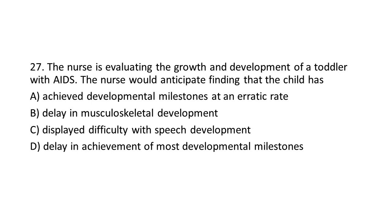Question 27. The nurse is evaluating the growth and development of a toddler with AIDS. The nurse would anticipate finding that the child has: A. Achieved developmental milestones at an erratic rate. B. Delay in musculoskeletal development. C. Displays difficulty with speech development. D. Delay in achievement of most developmental milestones.